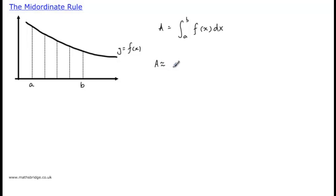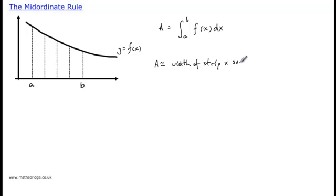Here we can see that we are trying to estimate the area underneath the curve y equals f(x), between the points x equals a and x equals b. The mid-ordinate rule states that this area is approximately equal to the width of each strip times by the sum of the mid-ordinates.